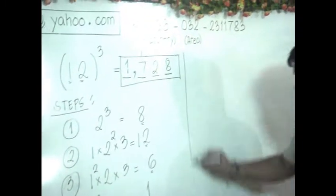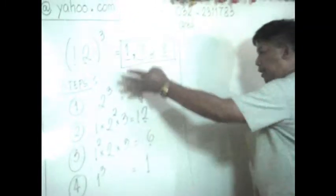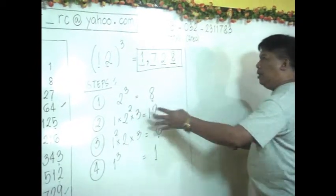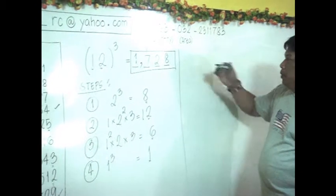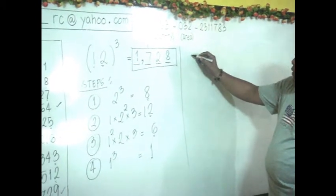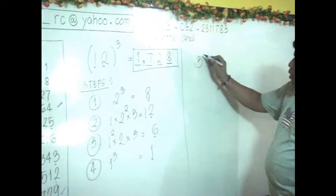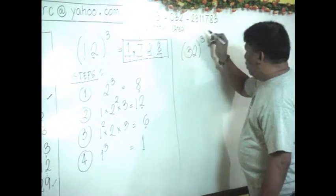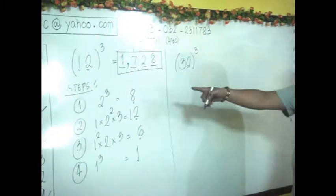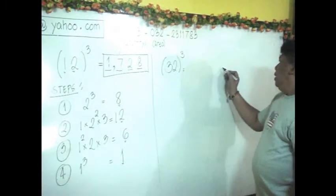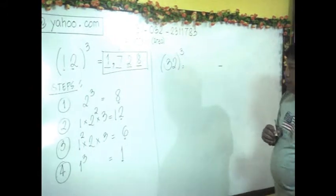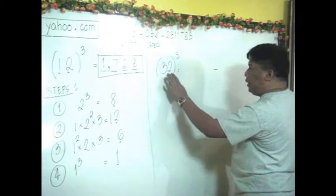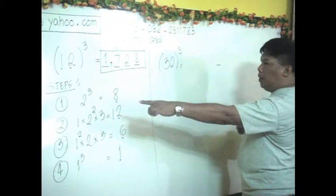Now remember the steps and try to do it in one line mentally. For the next example, take 32³. Following the steps: Step 1 — cube the last digit 2. We know 2³ = 8, so the last digit of our answer is 8.